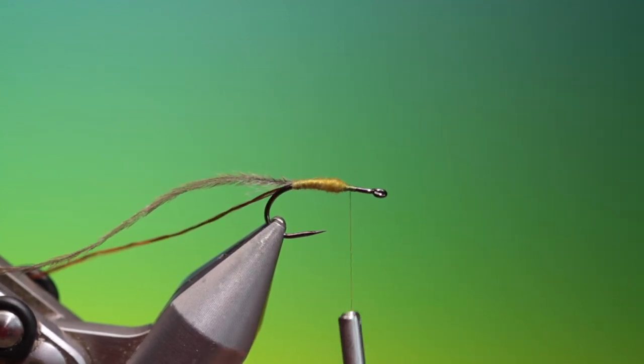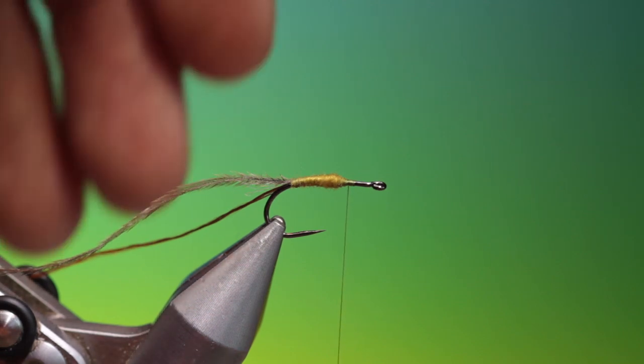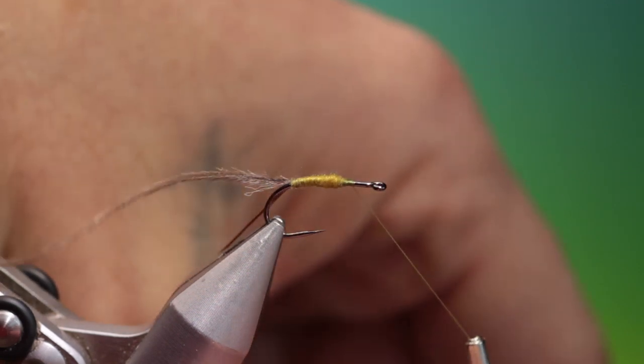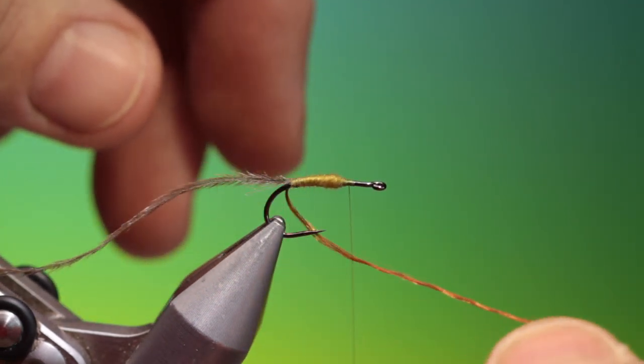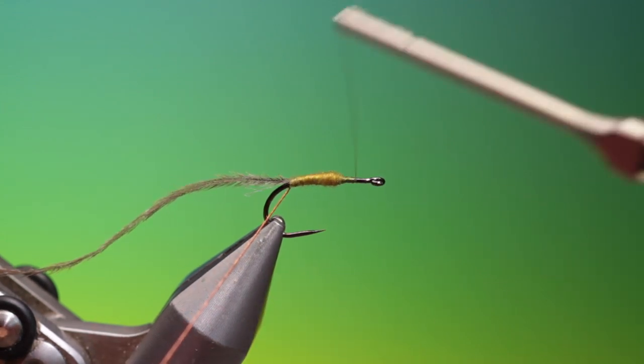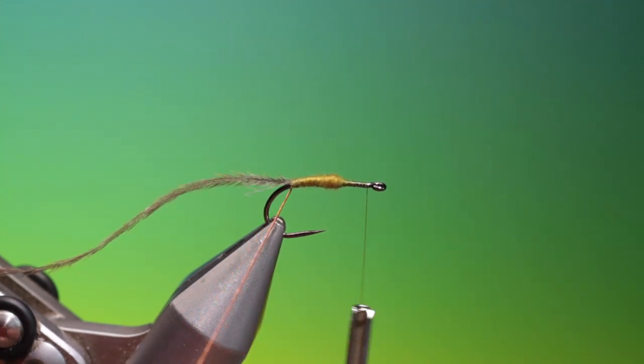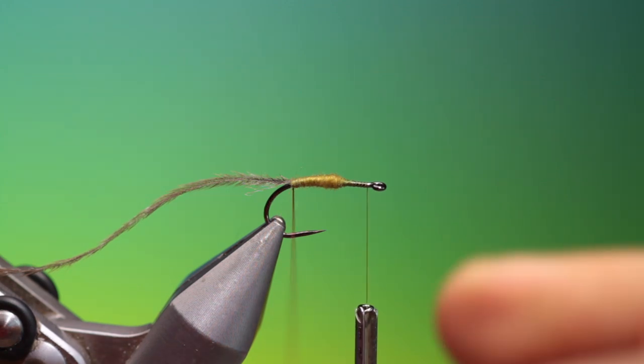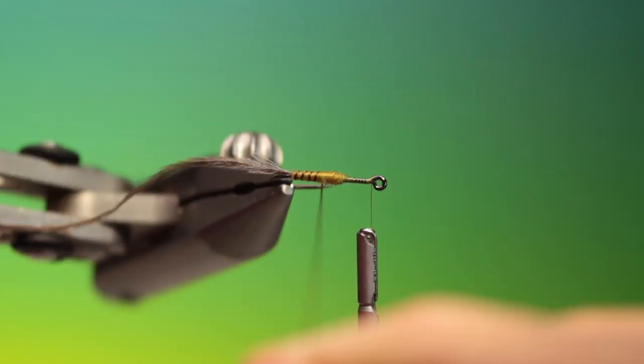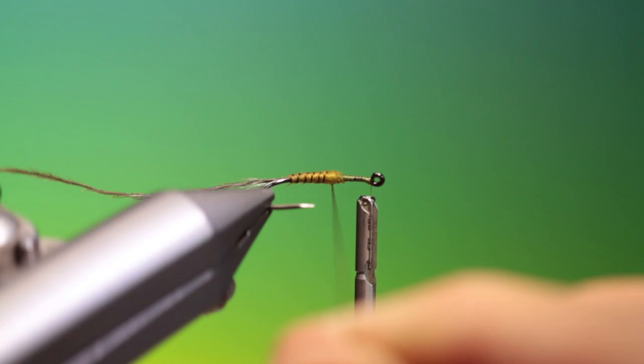That's perfect and we take our rib. Be careful you don't come in contact with the hook point with your floss otherwise you'll be in trouble. So we twist that up and very carefully we just put a rib over the abdomen.